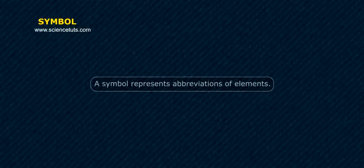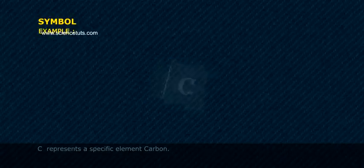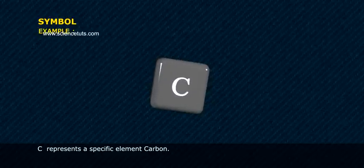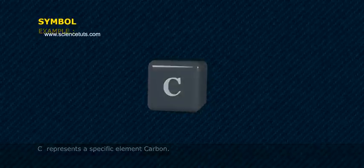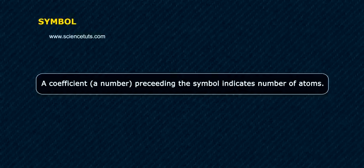Symbol, Formula, and Chemical Equation. A symbol represents abbreviations of elements. Example: Cu represents a specific element, copper. C represents a specific element, carbon. A coefficient, a number preceding the symbol, indicates the number of atoms.